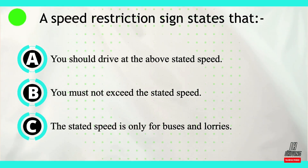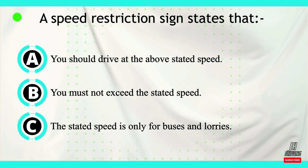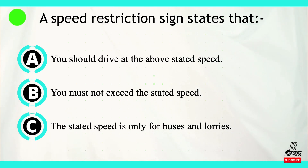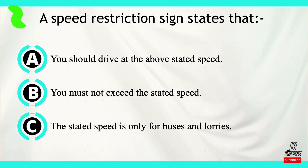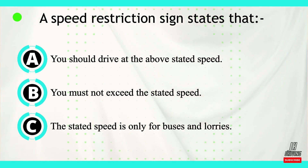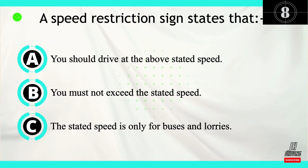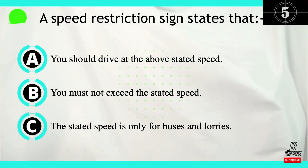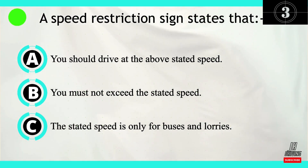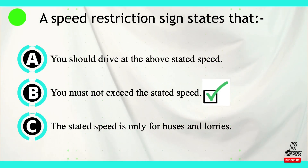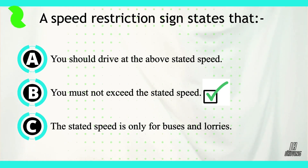Question number nine: a speed restriction sign states that — option A: you should drive at above the stated speed, option B: you must not exceed the stated speed, or option C: the stated speed is only for buses and lorries. The correct answer is B — you must not exceed the stated speed.